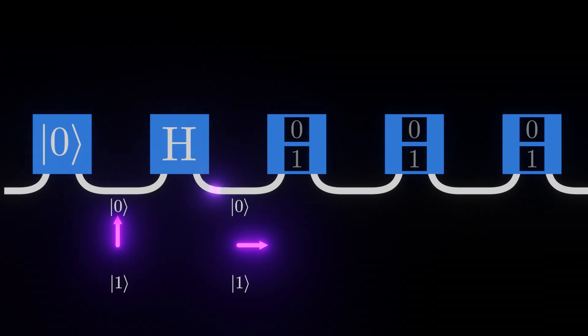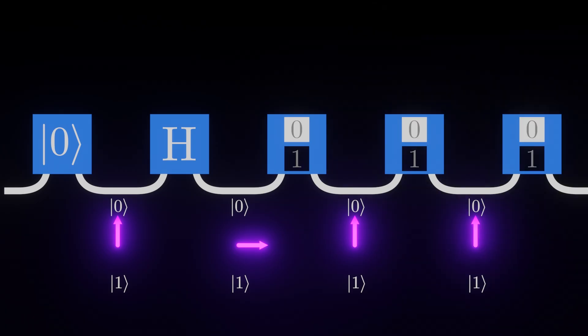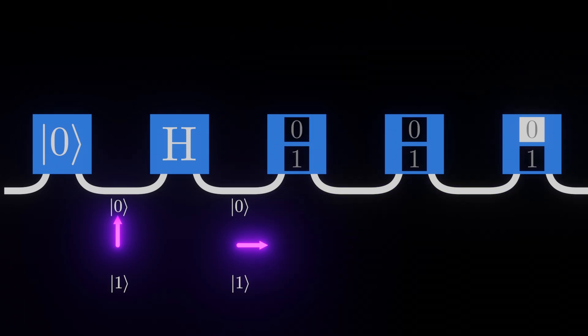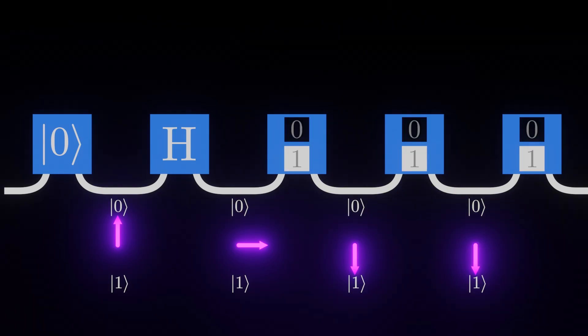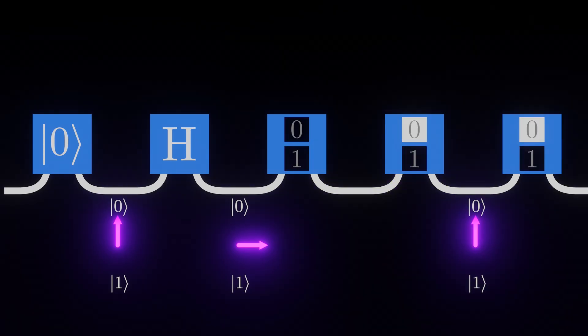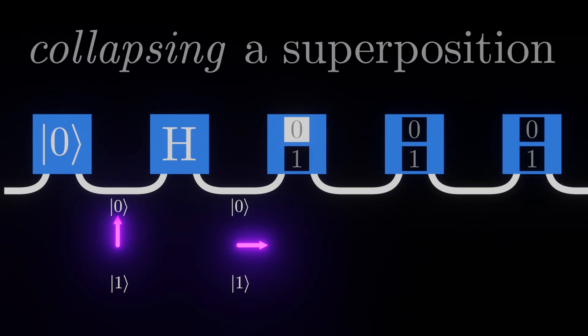This tells us that the measurement isn't just passively noting things down, but is actively changing the state of any qubit it touches, such that later measurements produce the same result. Specifically, the measurement gate works by randomly selecting one of the possible states, then making that the only possible state. This effect is called collapsing a superposition.